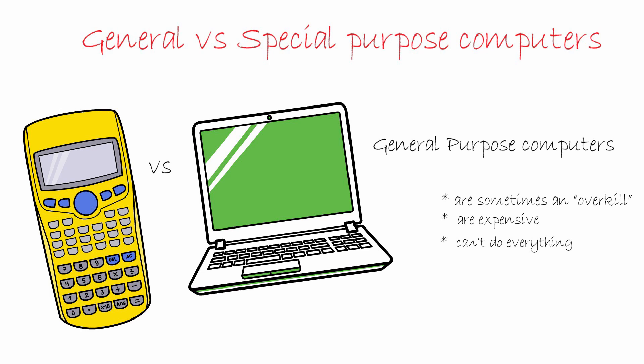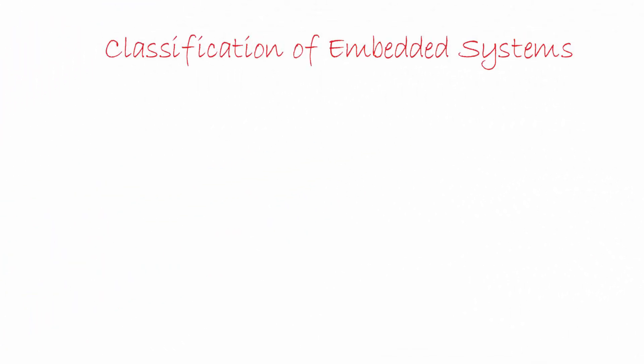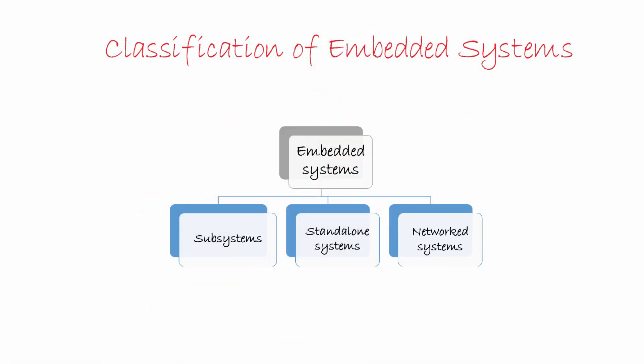Embedded systems can come in different flavors. They can be broadly classified into three categories: subsystems, standalone systems, and networked systems.